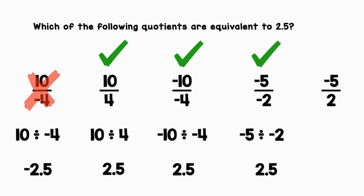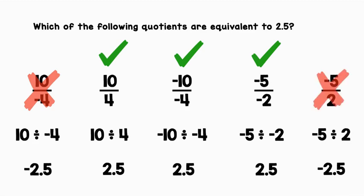Lastly, we have negative 5 over 2. That can be rewritten as negative 5 divided by 2. A negative divided by a positive is a negative, so this answer is negative 2.5 — and we're going to cross this one out.